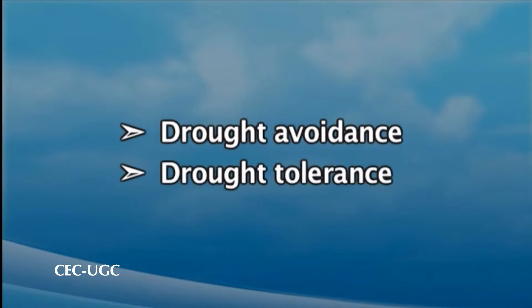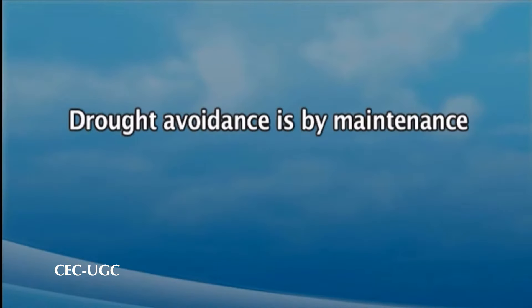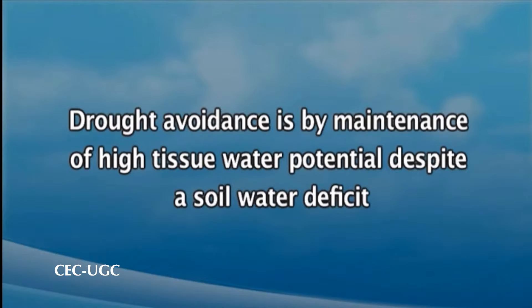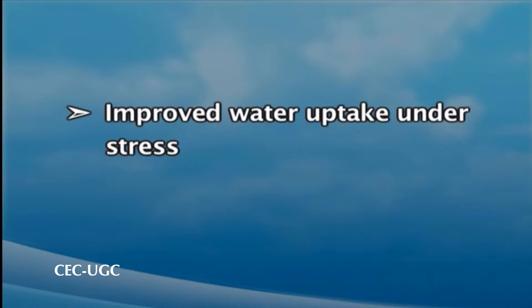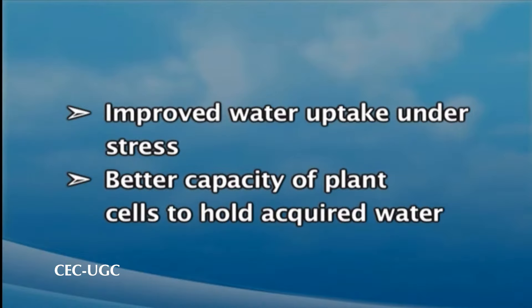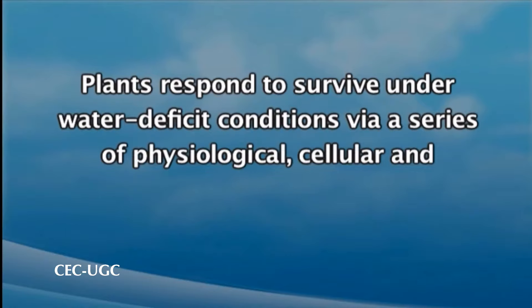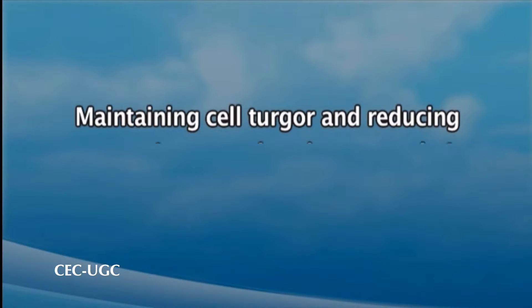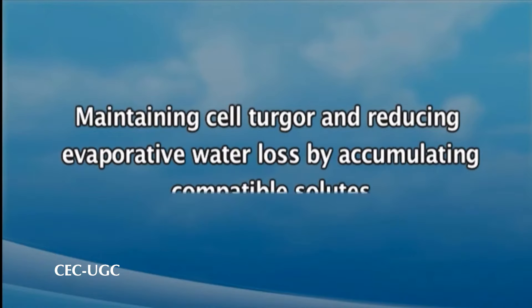Drought resistance mechanisms can be further classified into drought avoidance and drought tolerance. Drought avoidance is generally by maintenance of high tissue water potential despite a soil water deficit. Mechanisms such as improved water uptake under stress and the capacity of plant cells to hold acquired water and further reduce water loss confer drought avoidance. Plants respond to survive under water deficit conditions via a series of physiological, cellular and molecular processes culminating in stress tolerance, and may survive by maintaining cell turgor and reducing evaporative water losses by accumulating compatible solutes.